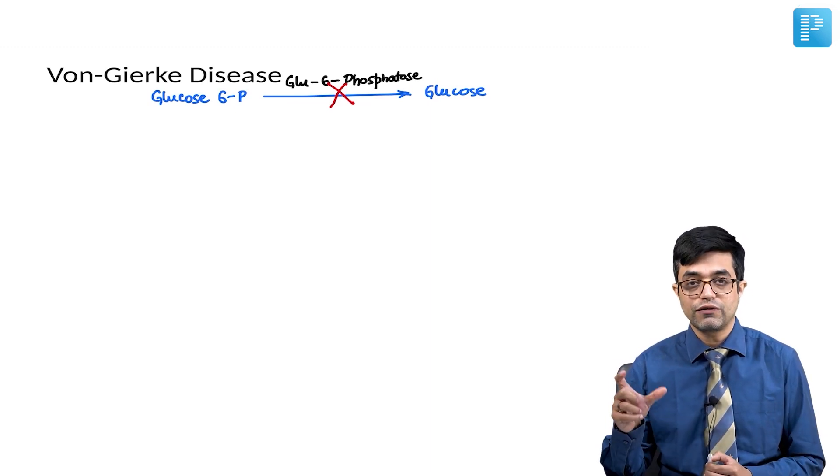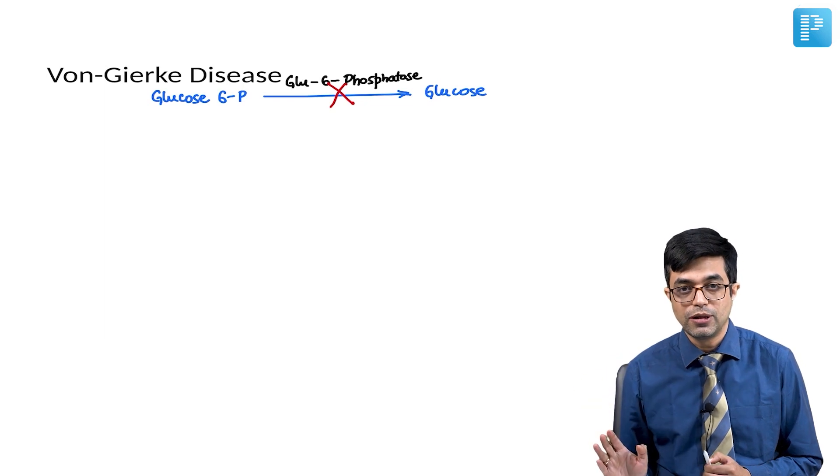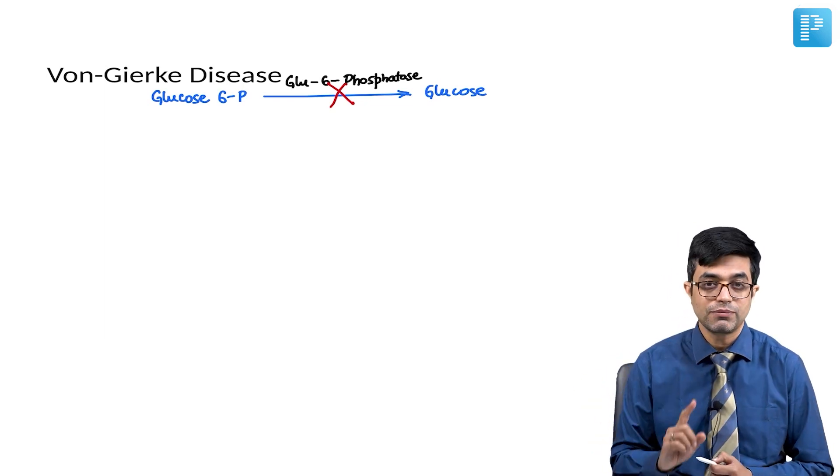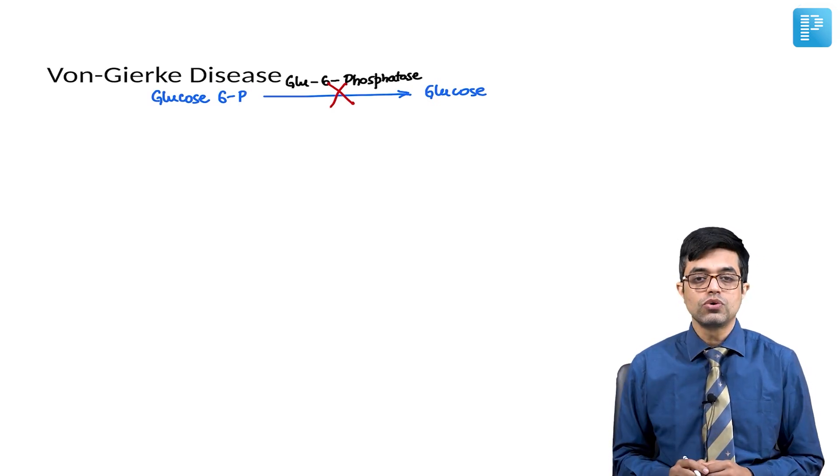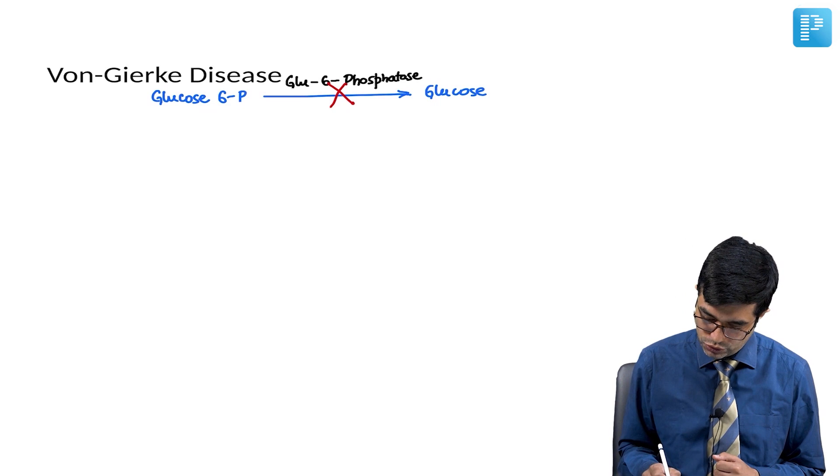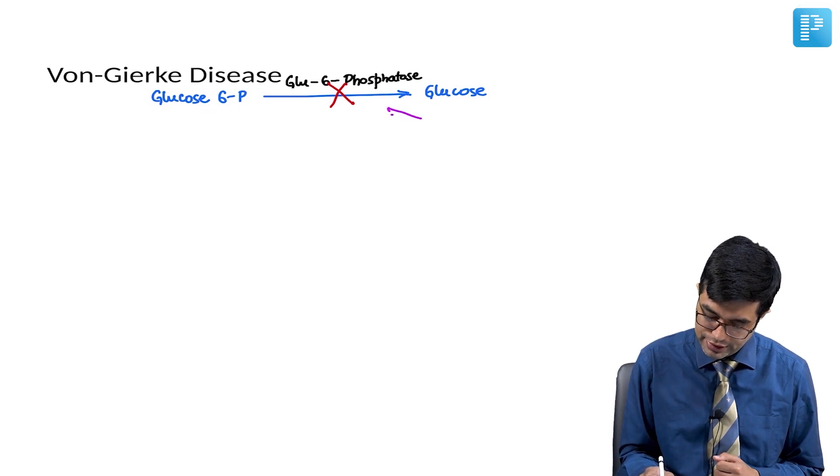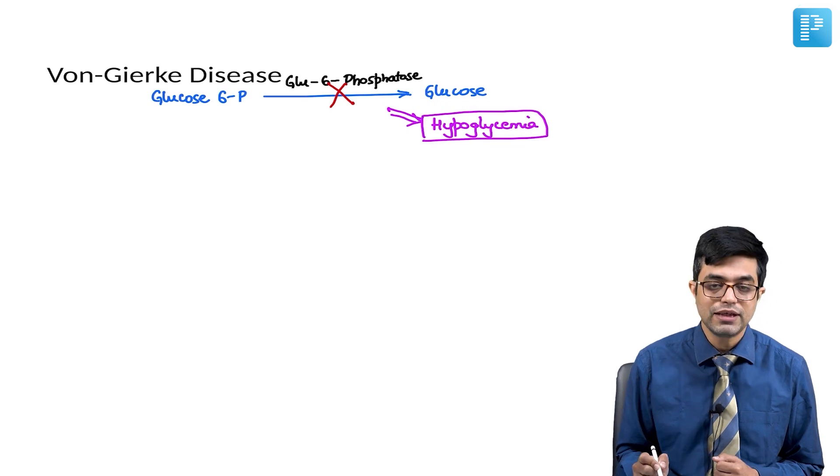So, the structure of the glycogen will not change, but it will increase in amount. That is what was mentioned in classification. When this conversion into glucose will not happen, what will it lead to? This will lead to recurrent attacks of hypoglycemia. So, the first clinical manifestation which will arise due to less glucose is hypoglycemia.